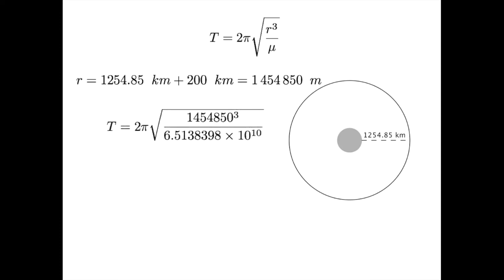Substituting this in with the gravitational parameter for the moon and pushing through a calculator gets us 43,200 seconds. Dividing by 60 converts us to minutes, and dividing by 60 again gets us a period of 12 hours.